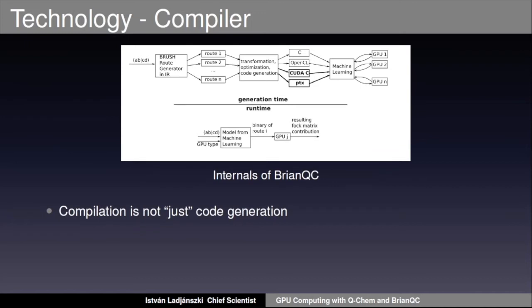The technology behind Brian QC was described in greater detail in our previous webinar, and we also published a paper about the compiler technology and how we utilized it in quantum chemistry in 2019, findable through Google Scholar. The reason I call it a compiler rather than a code generator: code generation involves substituting parts of templates to generate code. A compiler performs many more transformations before code generation. We use a computer algebra system as the front end — similar to Maple — which symbolically transforms and manipulates expressions while preserving the result.